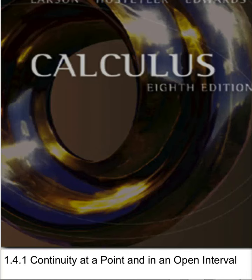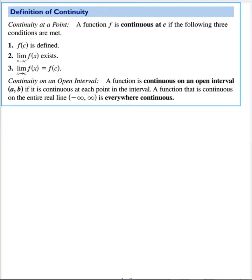Now we're going to discuss continuity at a point in an open interval. The first thing we need to do is define continuity. A function is continuous at a point C if the following three conditions are met.